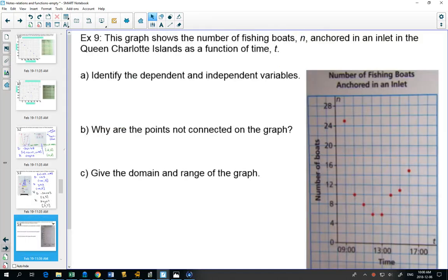Alright, one more example, then we're going to start a domain and range activity. This graph shows the number of fishing boats, n, anchored in an inlet in the Queen Charlotte Islands as a function of time. There are a lot of fishing boats at 9 a.m. And then what happens? Where do they go? Fishing. I'm a little scared that it looks like there's none coming back at a certain time. It's like they just all disappear eventually. Maybe they stop taking data. I'm not sure.